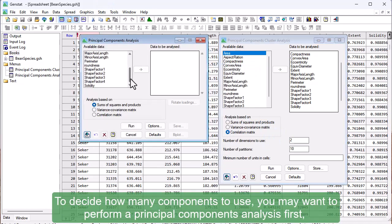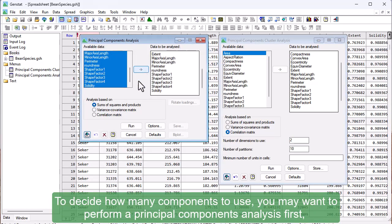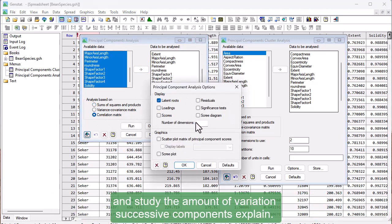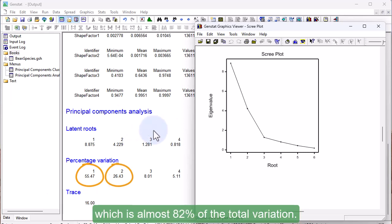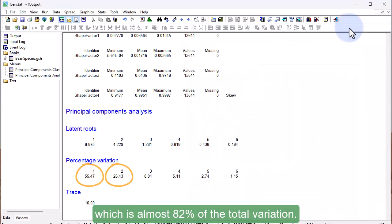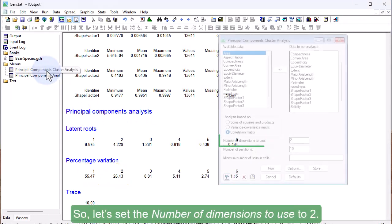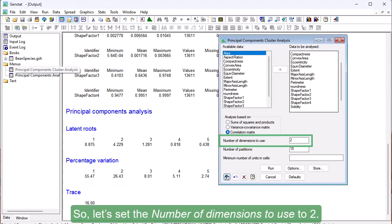To decide how many components to use, you may want to perform a Principal Components analysis first and study the amount of variation successive components explain. For our dataset, the first two Principal Components explain 55.47% and 26.43% of the variation in the data respectively, which is almost 82% of the total variation. So let's set the number of dimensions to use to 2.